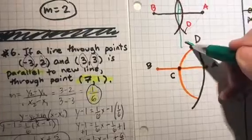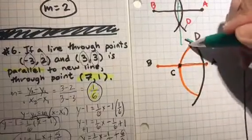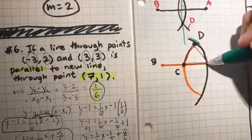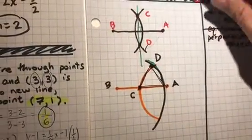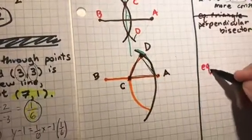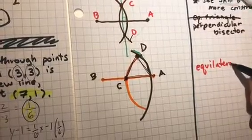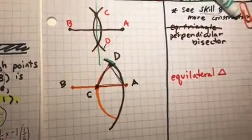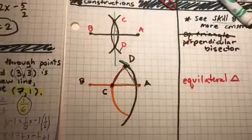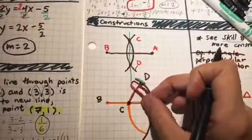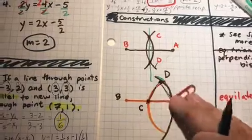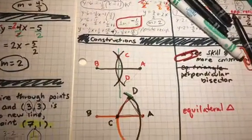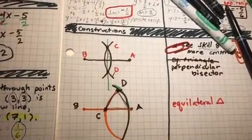The reason it's equilateral is because every mark or arc that was made was the same distance long, which was the length of my paper clip, which I'm using as my compass. Thanks for joining us.